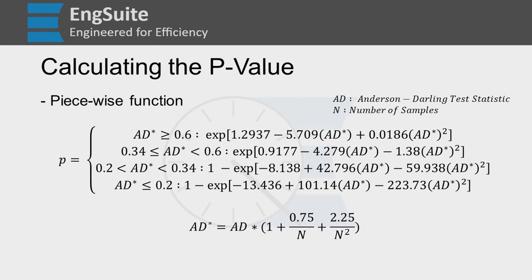So let's go back up. We have our AD star. Now we can plug this into the piecewise function. So if the AD star is greater than or equal to 0.6, we use that top function, plugging in the AD star in each of those sections.